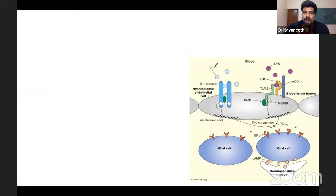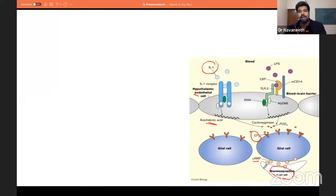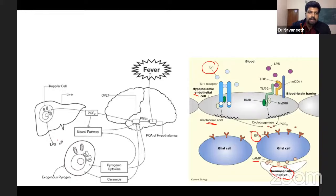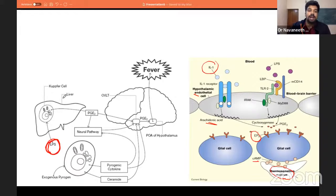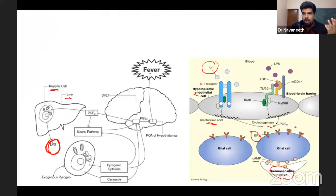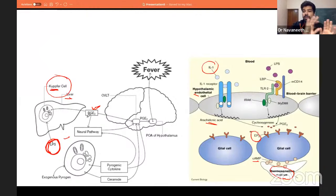IL-1 acts on the hypothalamic endothelial cell, which — from arachidonic acid — releases prostaglandins acting on the EP3 receptor, increasing cAMP in thermosensitive neurons of glial cells. Additionally, when bacteria enter systemically carrying LPS, the LPS directly stimulates Kupffer cells in the liver, which then release PGE2 that goes directly to the hypothalamus. This alternate pathway involving Kupffer cells is important to know for exogenous pyrogens like LPS.